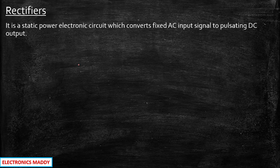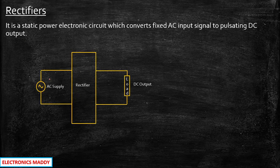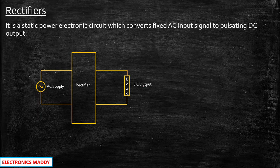First we need to understand what a rectifier circuit is. These are basically static power electronic circuits which convert a fixed AC input signal to a pulsating DC output. If you have an AC supply and you want a DC output across the load terminals, you need a rectifier in between to achieve conversion of AC to DC.